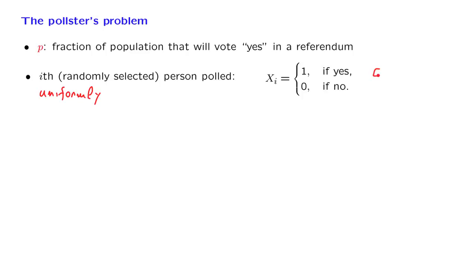And therefore, the expected value of Xi is equal to p. In addition, we assume that we select those people independently.